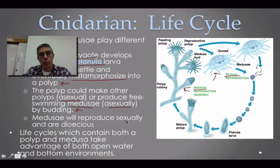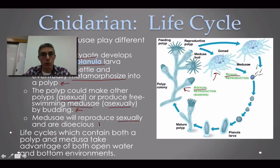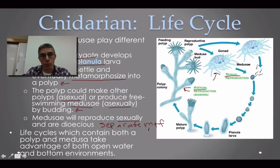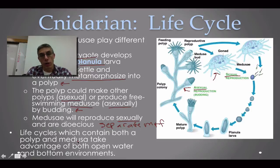The Medusa will reproduce sexually, meaning both male and female gametes are produced. What makes Cnidarians different from sponges is that Cnidarians are considered dioecious — meaning there are separate male and female animals. Males produce sperm and females produce eggs. Life cycles containing both a polyp and a Medusa body form can take advantage of both open water and bottom environments when it comes to their reproductive strategies.